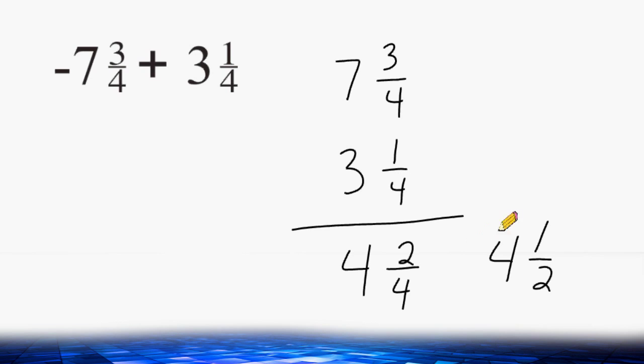But we must make sure that this value is negative. And the reason for that is because if you have a negative and a positive, you have to use the sign of whatever value has a larger absolute value. And because negative 7 and 3 quarters has a larger absolute value than 3 and 1 quarter, we have to use a negative sign.